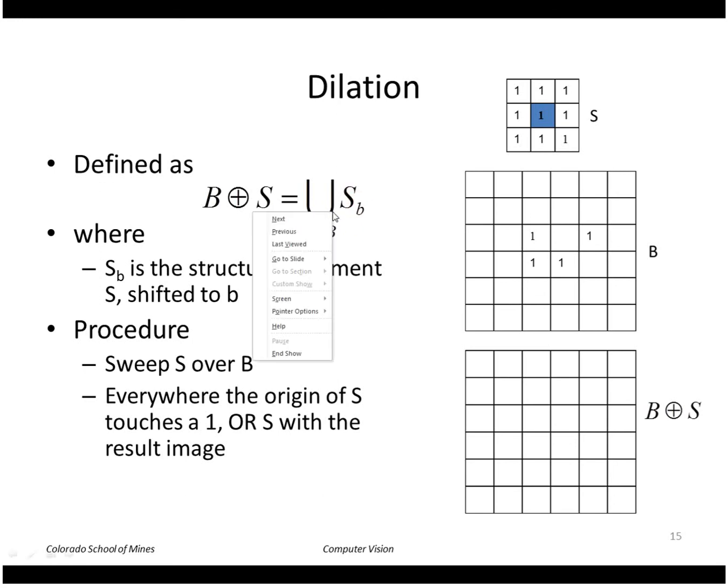So if I do that for this example, if I take this first one right there and center my structuring element there and then I put ones wherever that structuring element lies. Do it again here. The structuring element lies there and I OR it with this part. Repeat for the other two and I'll get ones here and here. So basically I've expanded the region with dilation.